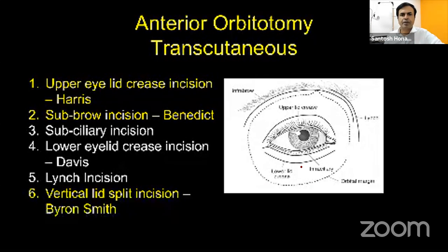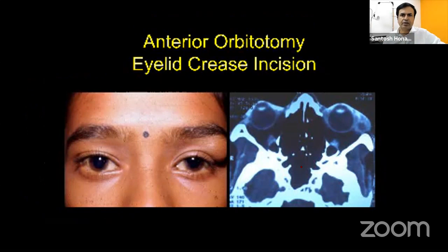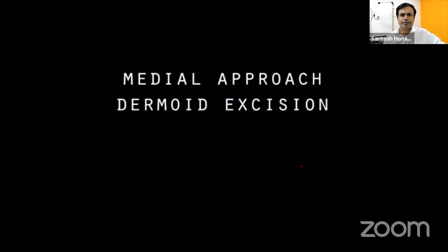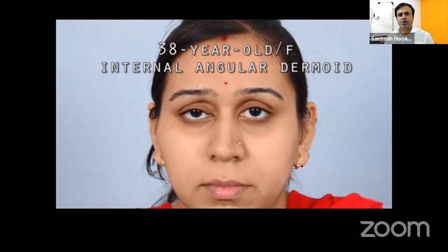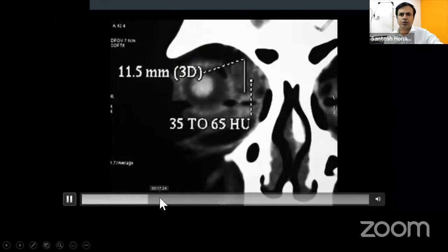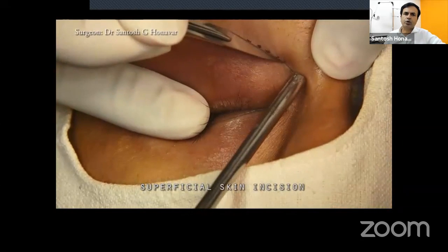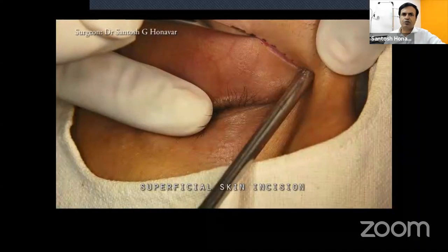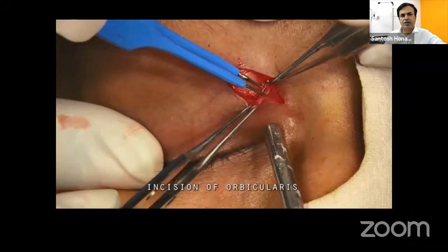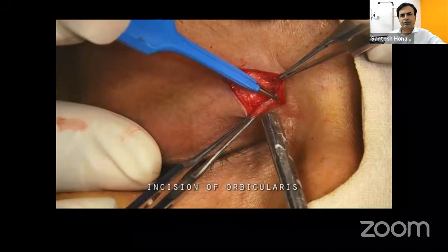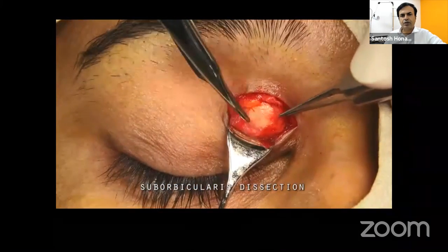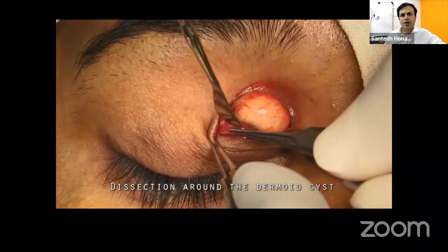Simple orbital dermoids, extraconal or intraconal, can be approached directly or by lid crease. For a small supranasal dermoid, a curvilinear direct incision right on top of the lesion is not cosmetically problematic. When approaching a dermoid, lift the tissues and cut, leaving some tissue on top of the dermoid to hold. Always hold tissues around the dermoid and dissect, not the dermoid itself — sharp and blunt dissection under visualization, with careful cauterization of the vascular pedicle.